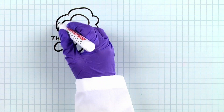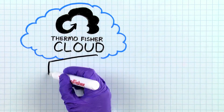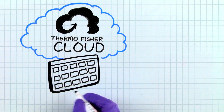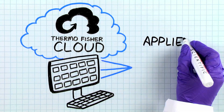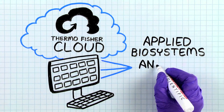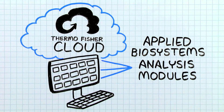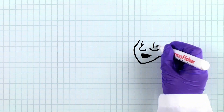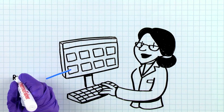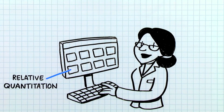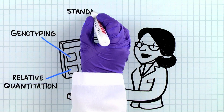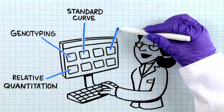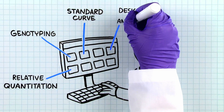Thermo Fisher Cloud is a cloud-based scientific computing analysis platform in which the Applied Biosystems Analysis Modules live. The modules available include relative quantitation, genotyping, standard curve, and design and analysis applications.